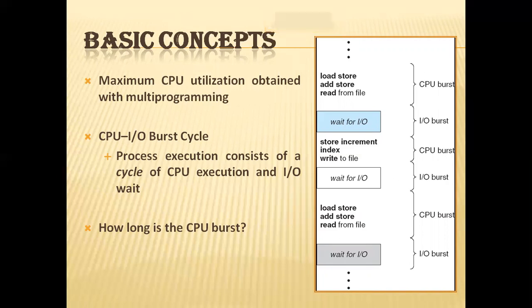The success of scheduling depends on the observed properties of processes. Process execution consists of a cycle of CPU execution and I/O wait — processes alternate between these two states. That is, process execution begins with a CPU burst, followed by an I/O burst, then another CPU burst, then another I/O burst, and so on, as we can see in this particular figure.